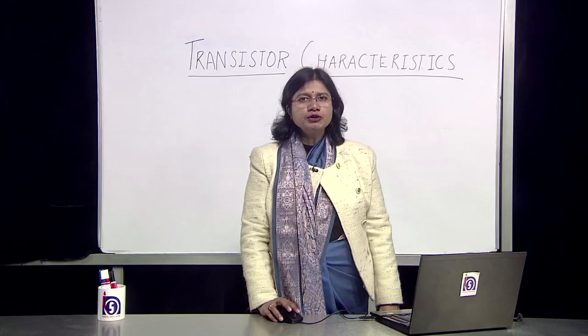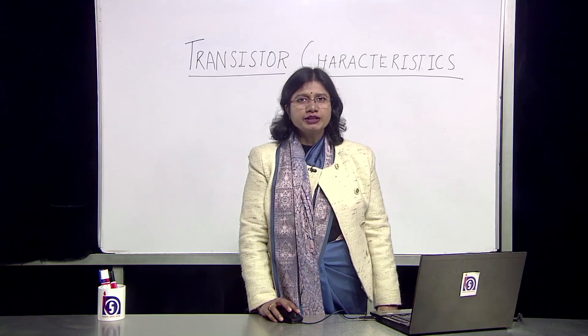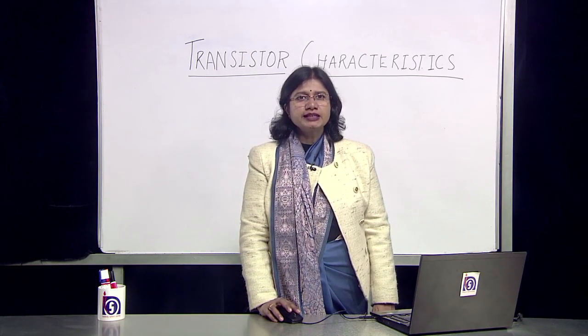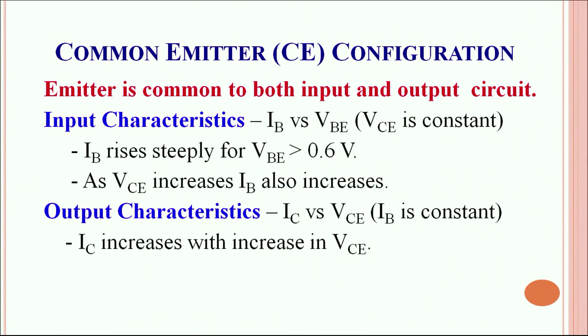Let's understand the input characteristics of the common emitter configuration. For the input characteristics, the base current is plotted as a function of the base-emitter voltage, keeping the collector-emitter voltage constant. The base current rises very largely when the base-emitter voltage is greater than 0.6 volts. This typically indicates the behavior similar to a forward-biased diode. As the collector-emitter voltage is increased, IB is also increased.